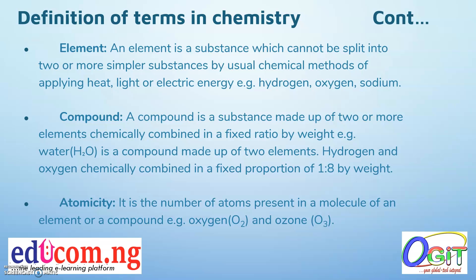For example, water (H2O) is a chemical compound made up of two elements — hydrogen and oxygen — that are chemically combined in a fixed proportion of 1:8 by weight. In a compound, the elements must be of different types.